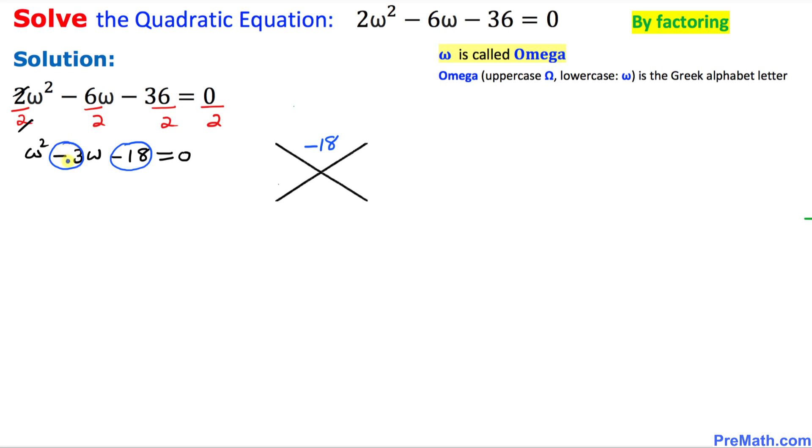Now let's find the possible factors of -18 that could give us -3 if we add and subtract. The possible factors of 18 are obviously 3 and 6. Now let's fix the sign.